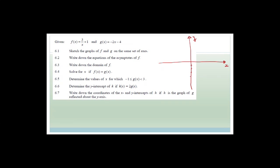The y-intercept is negative 4. It is a negative gradient graph, which slopes up to the left. To find where it cuts the x-axis, let y = 0: so 0 = −2x − 4, giving 4 = −2x, therefore x = −2. So g(x) passes through (−2, 0) and (0, −4). Use your ruler to draw a clean straight line — that there is g(x).